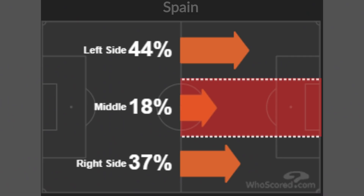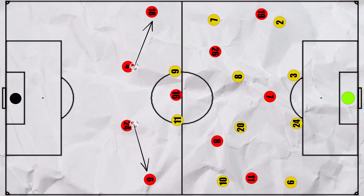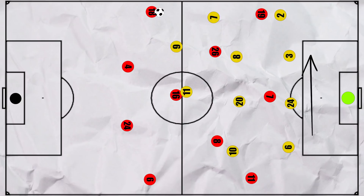By trying to limit the central progression, which they generally did successfully, it would force Spain to commit more often to one side or the other earlier in the build-up, making it easier for Sweden's defenders to cope as they could shift across.